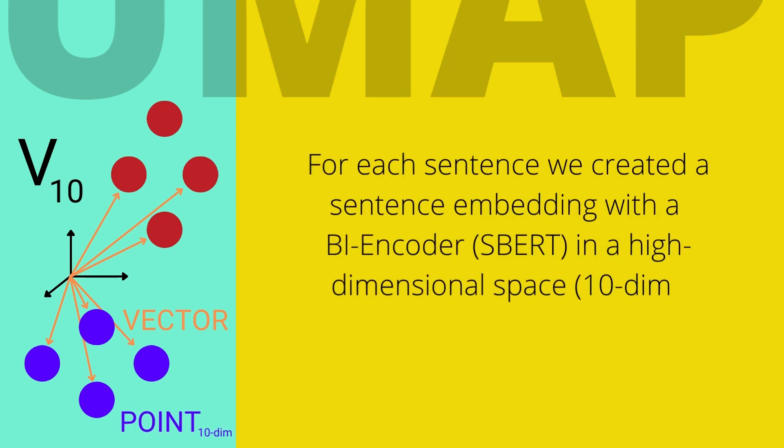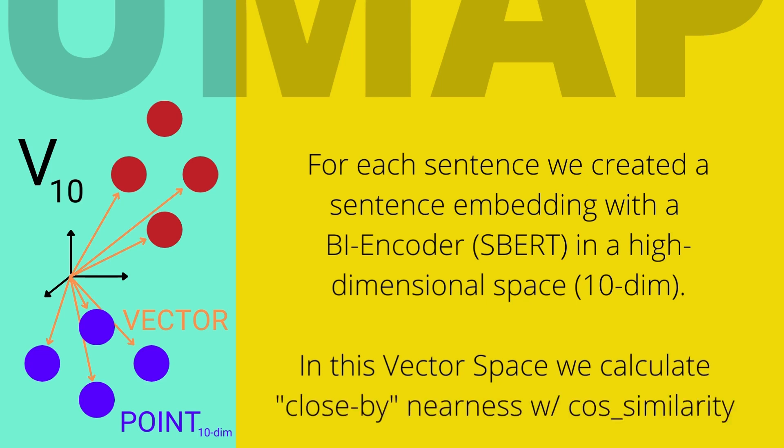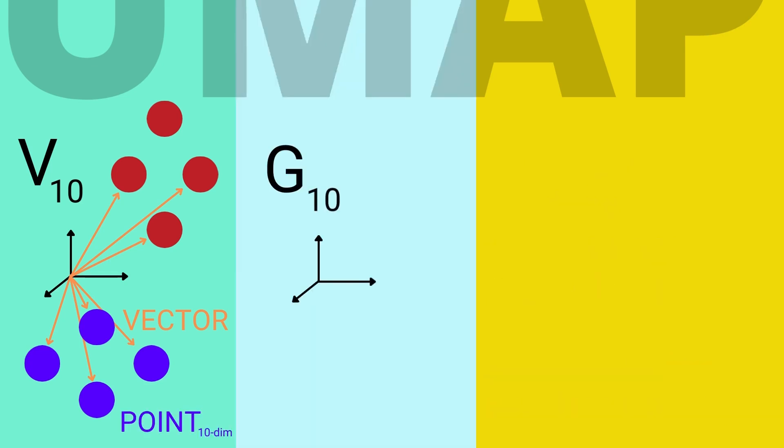Now for each sentence we create with an embedding code in S-BERT in high-dimensional space, we can calculate the closeness. But let's change the topological space.